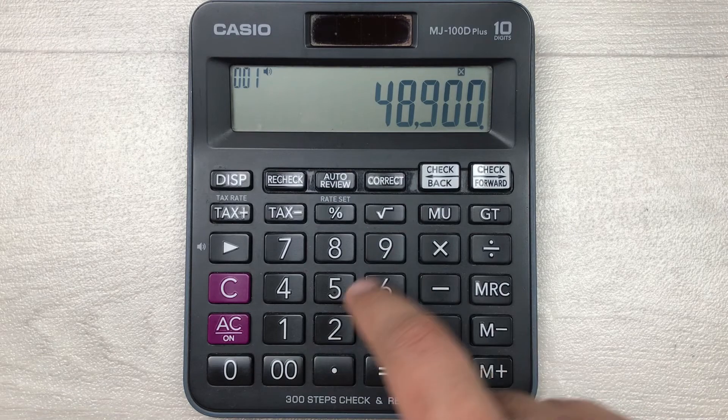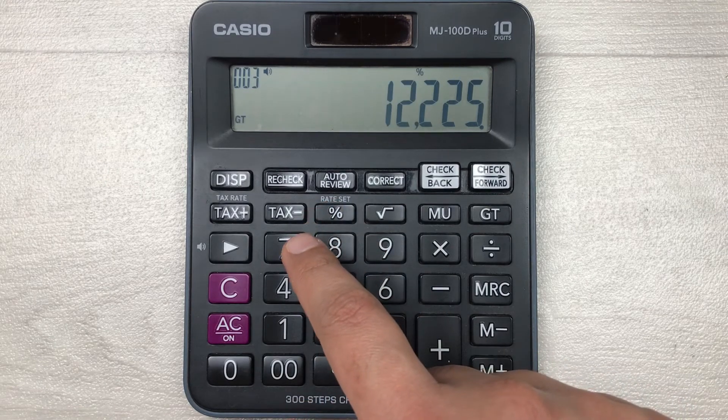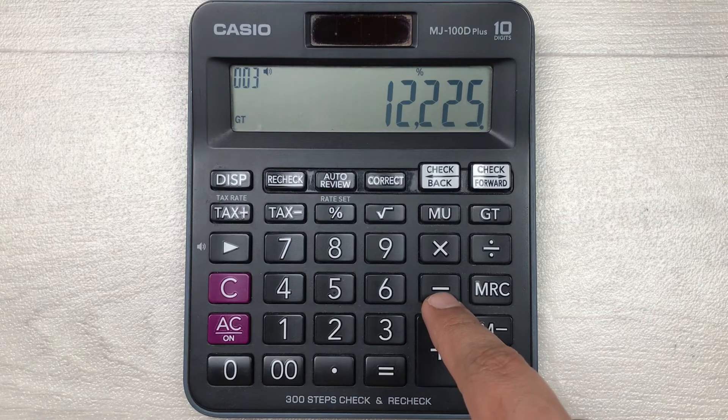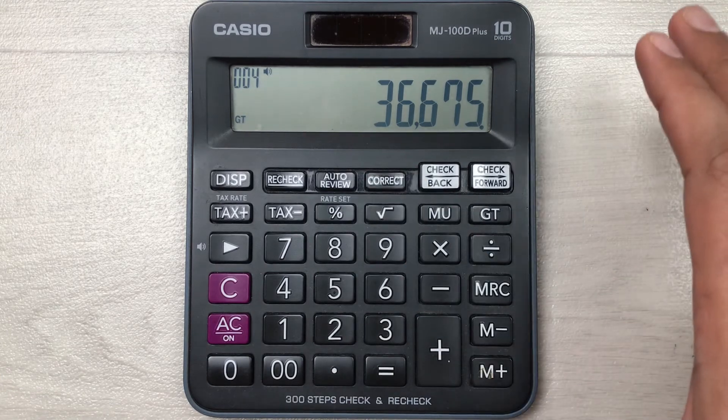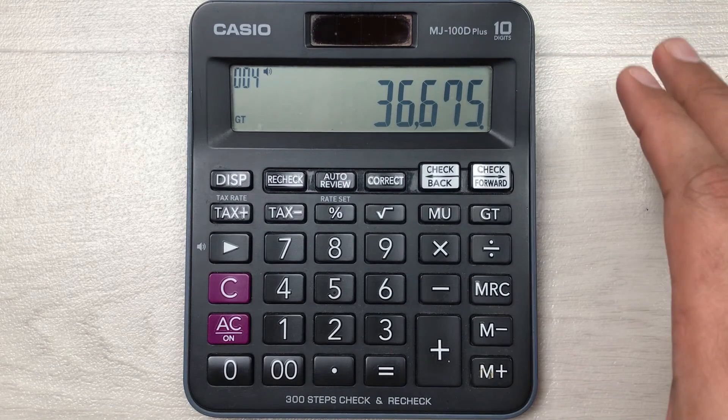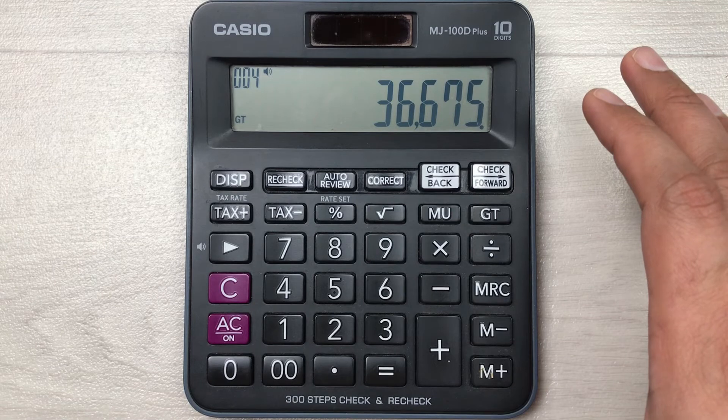You have to multiply it with 25, then you press this percentage button, and in the last you have to press this minus button. So here is the final answer. 366.75 is the final price after 25 percent off.